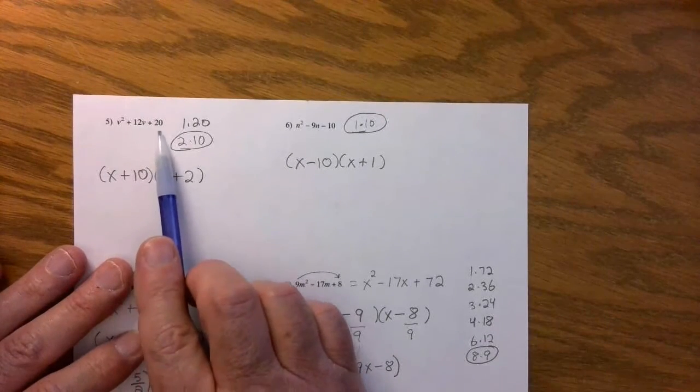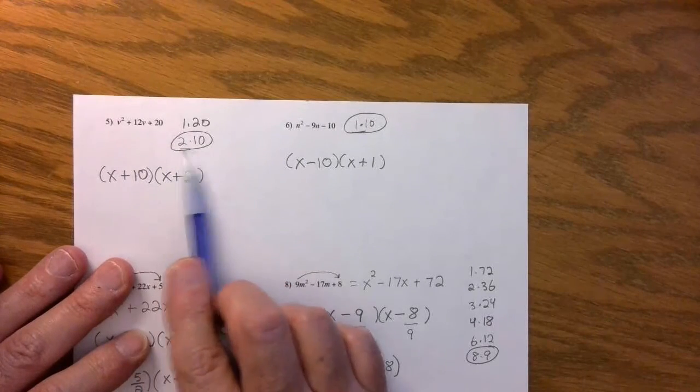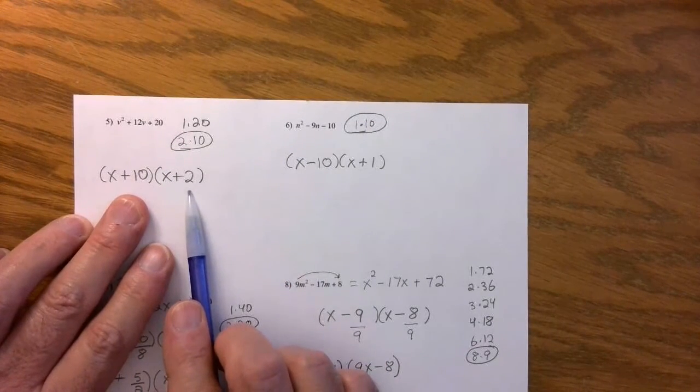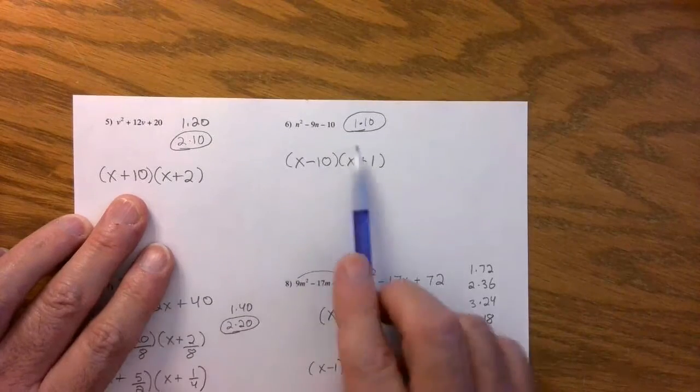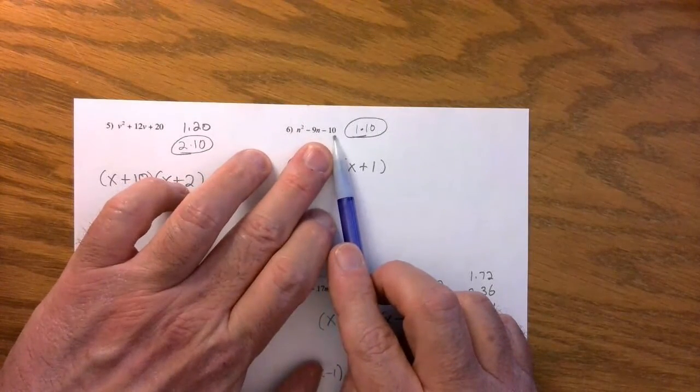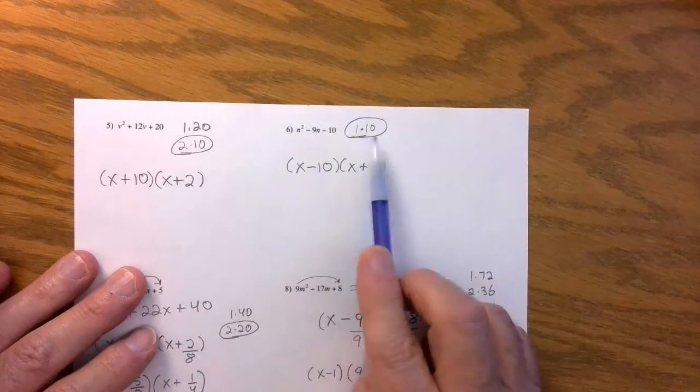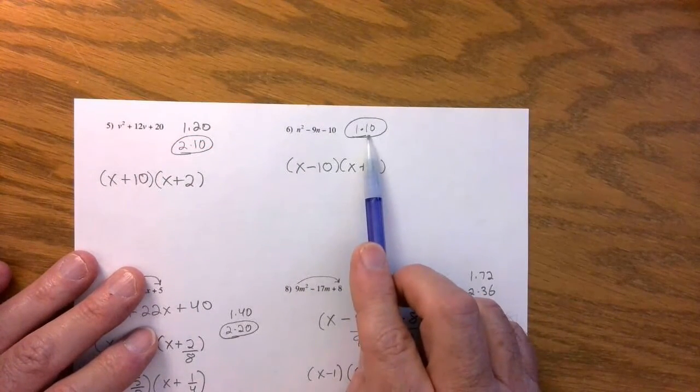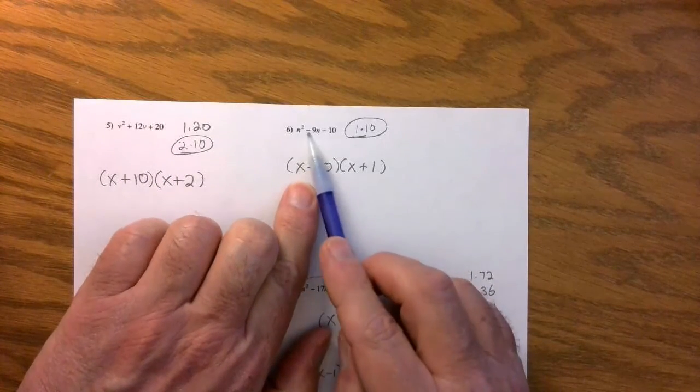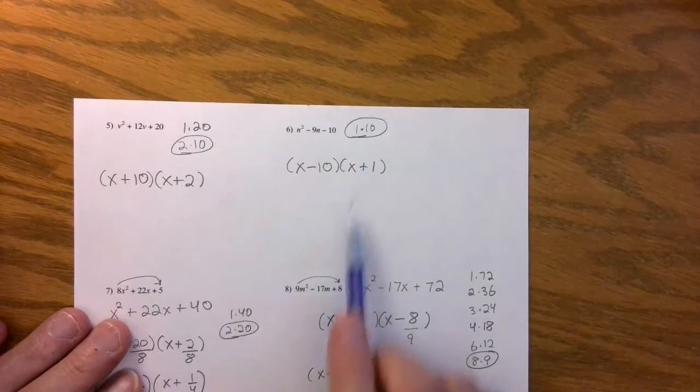We're looking for two numbers. Multiply it together, you get twenty. Add it up, you get twelve. Two and ten, I found them. I'm done. They're both plus. Same at this one. Looking for two numbers multiplied together is ten. When I subtract them, I get nine. Well, that's just one and ten. Remember, the signs are different. But because that's negative nine, make sure the negative goes with the ten here. These two are kind of easy.